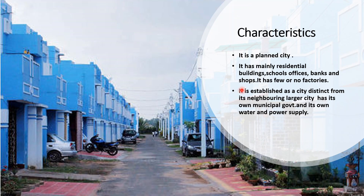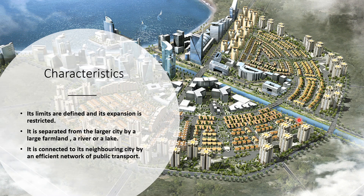Let us understand the characteristics of a satellite city. A satellite city is a planned city — it has mainly residential buildings, schools, offices, banks, and shops. It has few or no factories. It is established as a city distinct from its neighboring larger city, and has its own municipal government and its own water and power supply. Its limits are defined and its expansion is restricted.